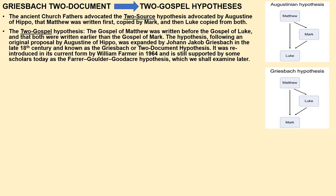The two-gospel hypothesis holds that Matthew was written before Luke, and both were written earlier than Mark. Following Augustine's original proposal, it was expanded by Johann Jakob Griesbach in the late 18th century — known as the Griesbach or two-document hypothesis. It was reintroduced in its current form by William Farmer in 1964, who wrote a famous article called 'Is Q Really Necessary?' and it's still supported by some scholars today as the Farmer-Goulder-Goodacre hypothesis.